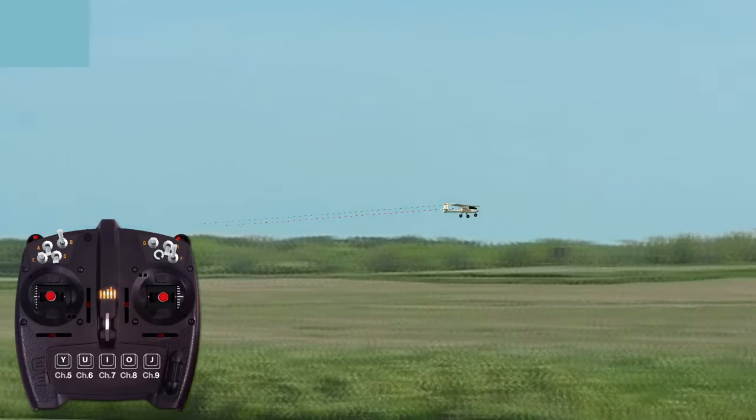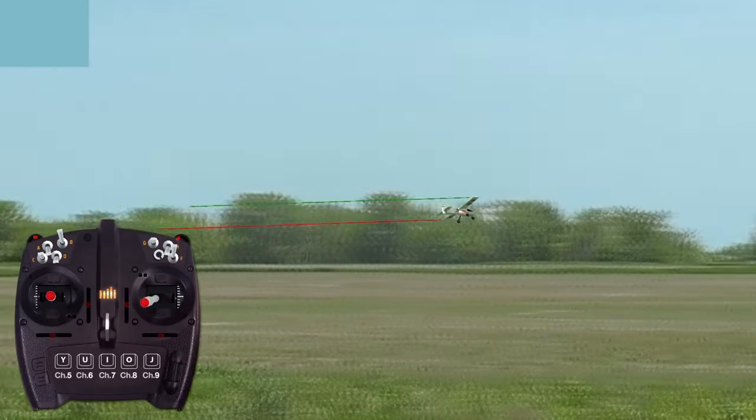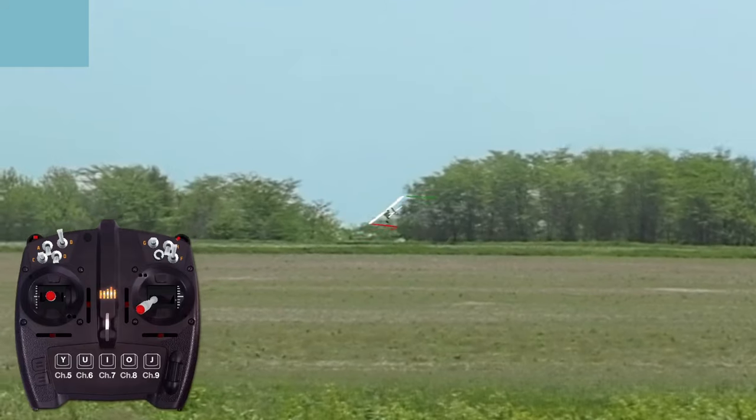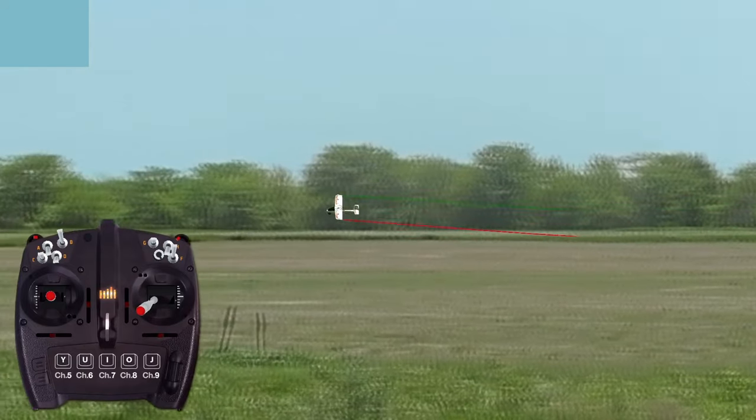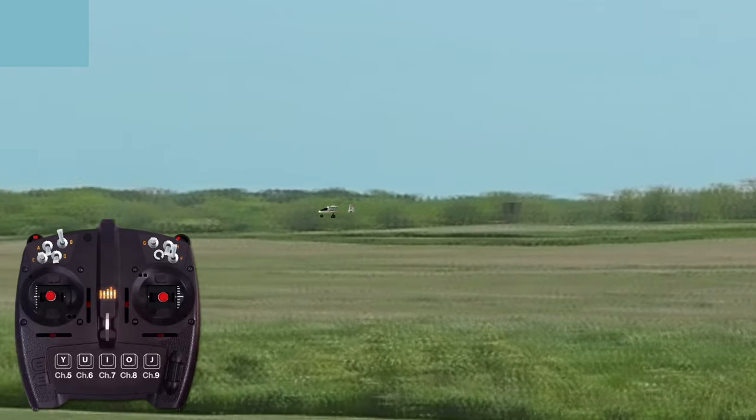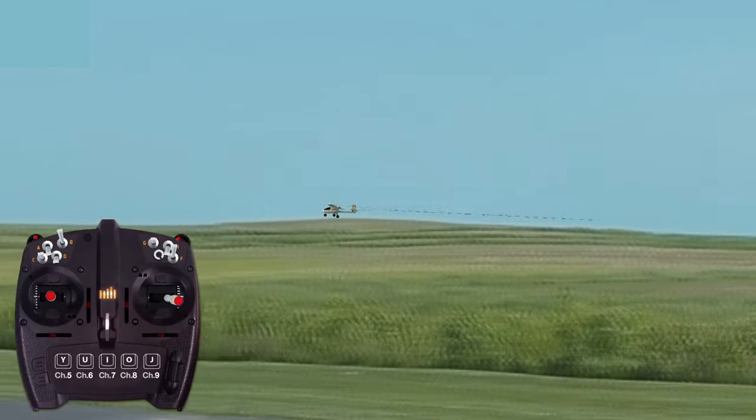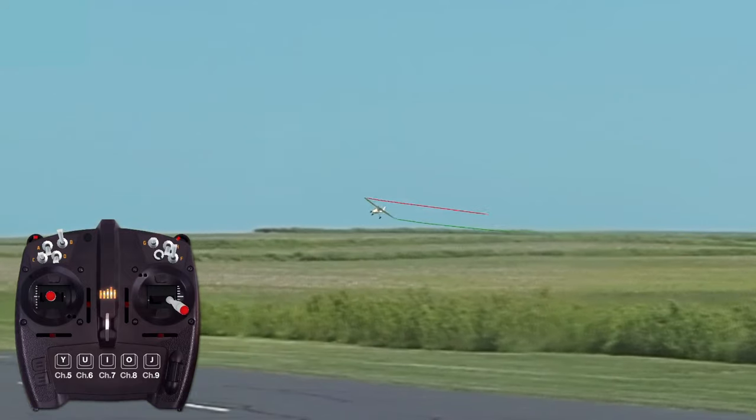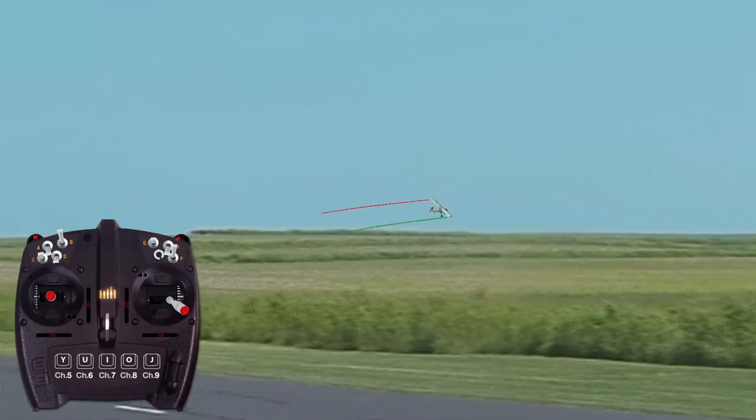In the beginner safe mode, bank and pitch are typically limited to no more than 30 degrees, thereby limiting the plane to mild maneuvering. Most significantly, the airplane returns to an upright level attitude the instant the transmitter controls are returned to neutral. Other than running into obstacles, it is virtually impossible for a pilot to lose control in this mode.